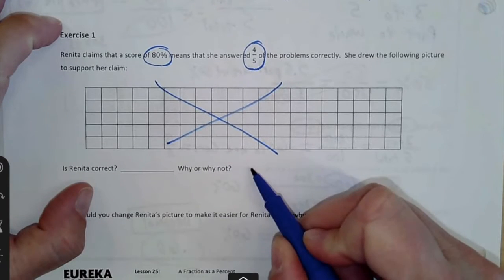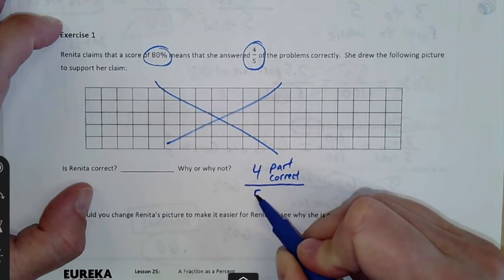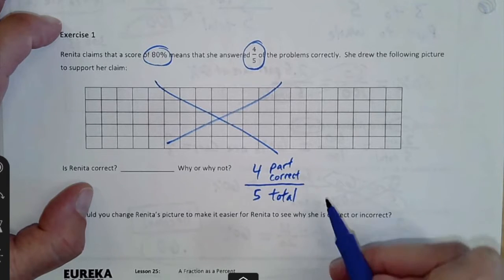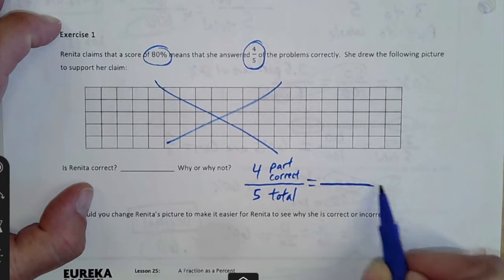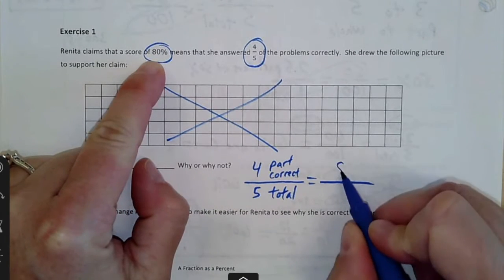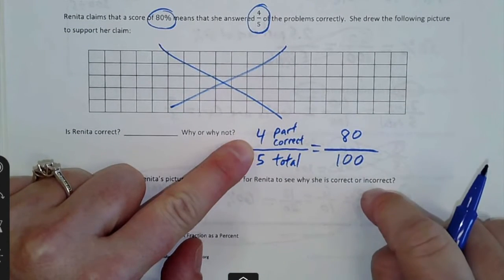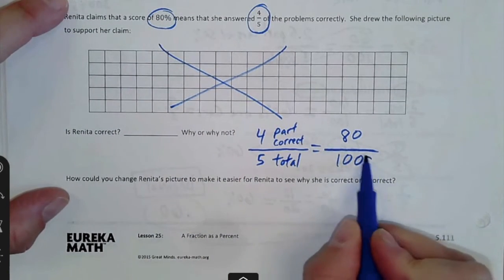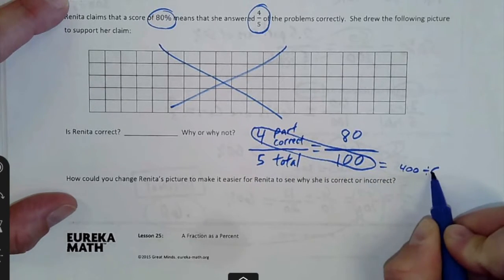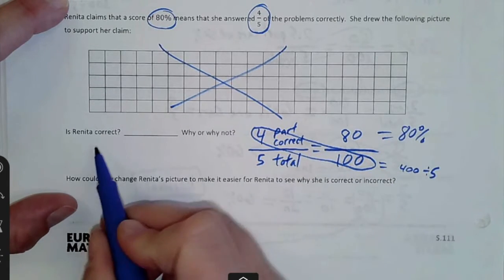So do these two things, are they the same thing is basically what we're trying to figure out. So is four, which is the part she got correct, out of five, which would be like the total, four to five, that's a fraction. Is that the same thing as 80%? Well, what's 80%? A percent is a number out of 100. So if they gave us 80%, is that the same thing as 80 out of 100? Can you make this fraction four to five the same thing as 80 to 100? If you solve cross-products, four times 100, that's 400, divide by five, and I get 80, which is 80%. So was she correct? Yes.